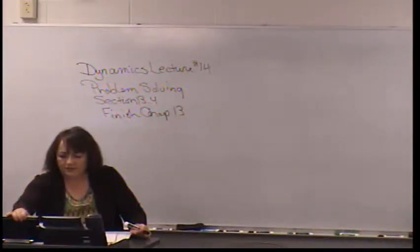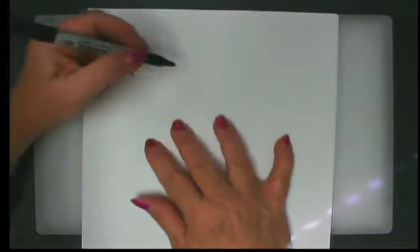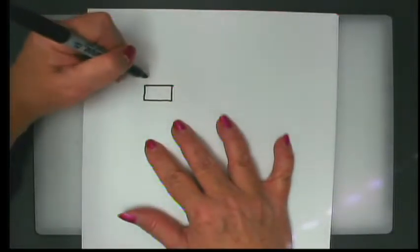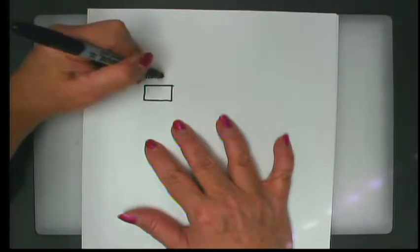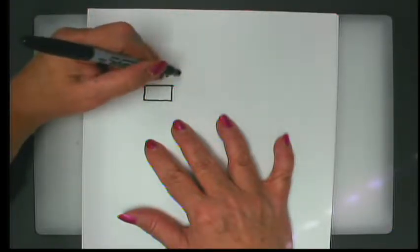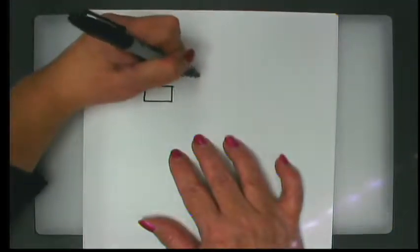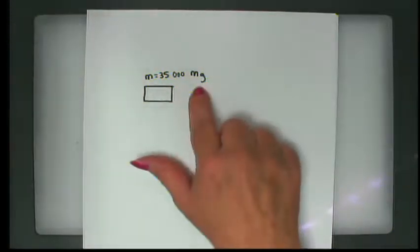Coming over to the document cam, the first thing I'd like to do is look at problem 13.119. What we have here is an ocean liner with a mass of 35,000 megagrams. Let's think about what that means.